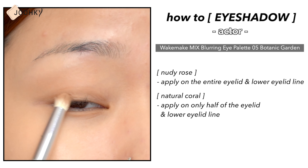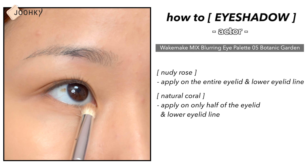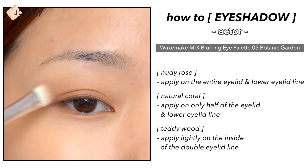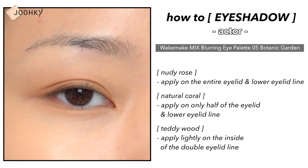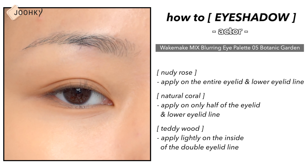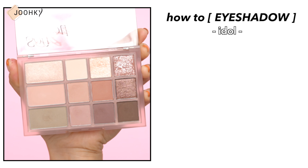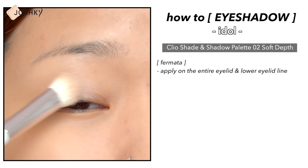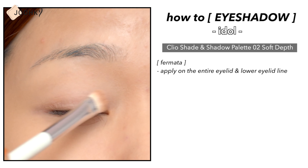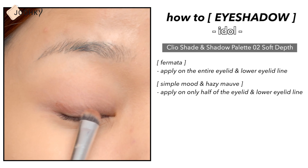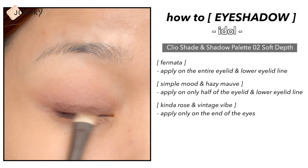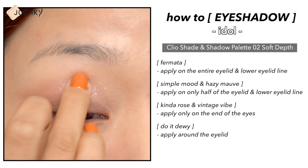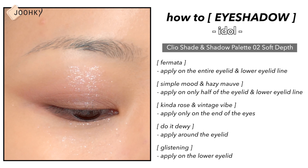I didn't use all the colors in this palette, but only a few natural shades. Rather than using dark shades to make the eyes stand out, you just need to make the makeup feel like it only enhances the features a little more than usual. For the idol makeup, I'm going with Clio's Shade and Shadow Palette No. 2 Soft Depth — a palette with a range of reddish and pinkish shades for gorgeous eye makeup. Reddish and pinkish colors look slightly more glamorous than just brown. Shading the eyes with a matte shadow and defining them lets you create gorgeous points with shimmers or glitters.